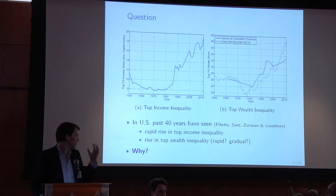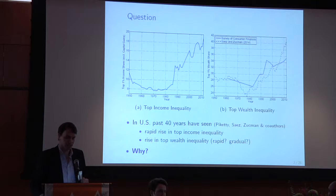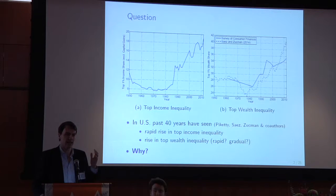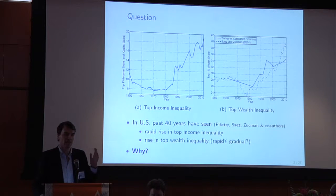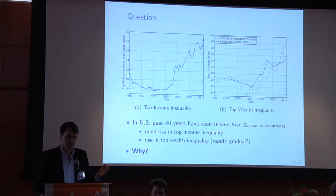Either way, the obvious question when you look at these graphs is: why? Why has top labor income inequality increased so rapidly, and maybe also top wealth inequality?